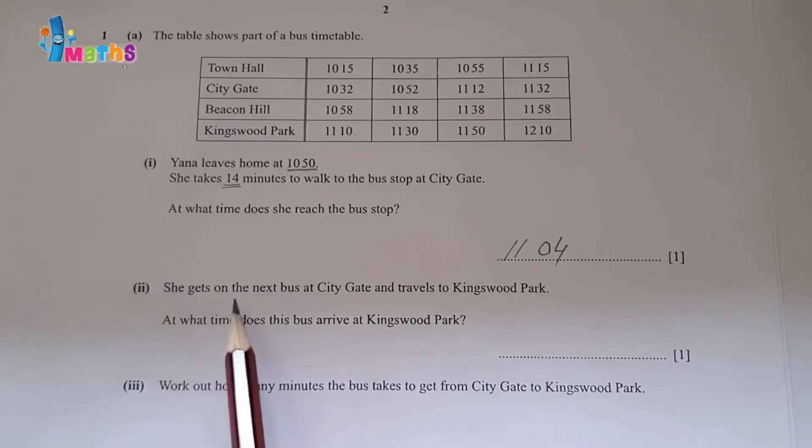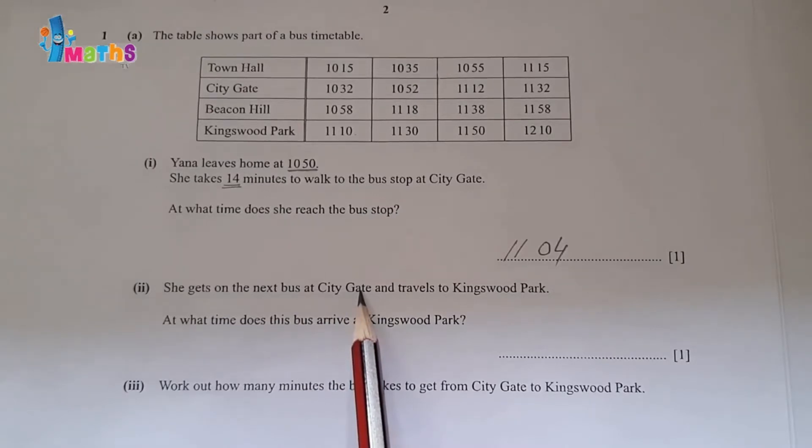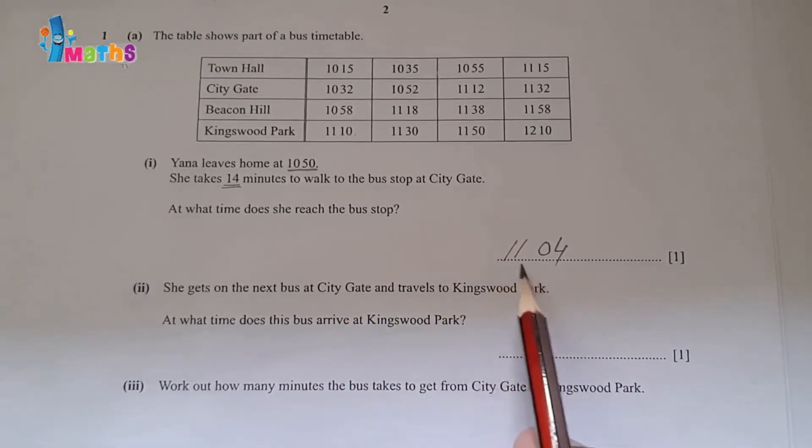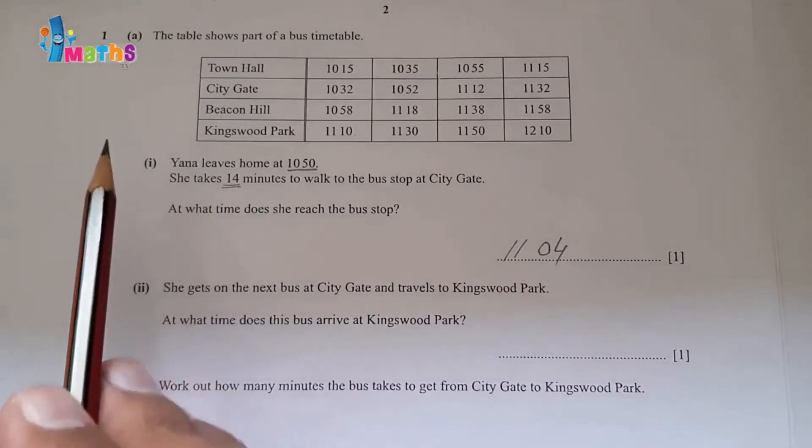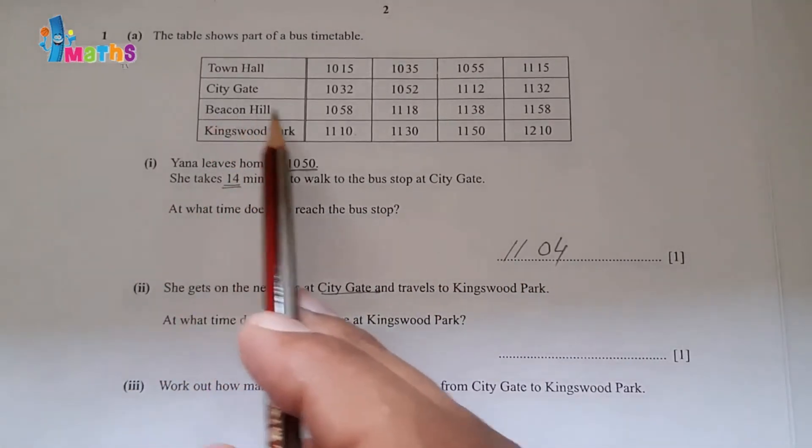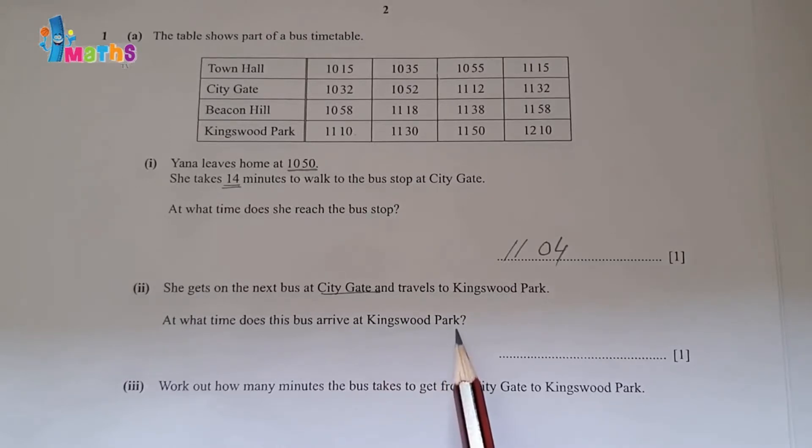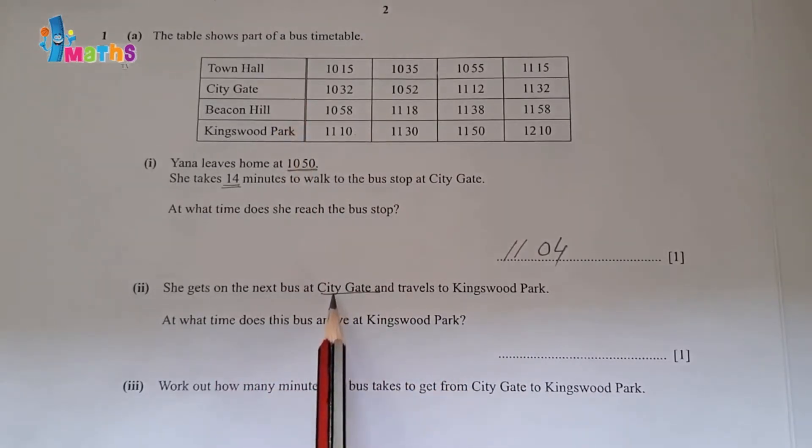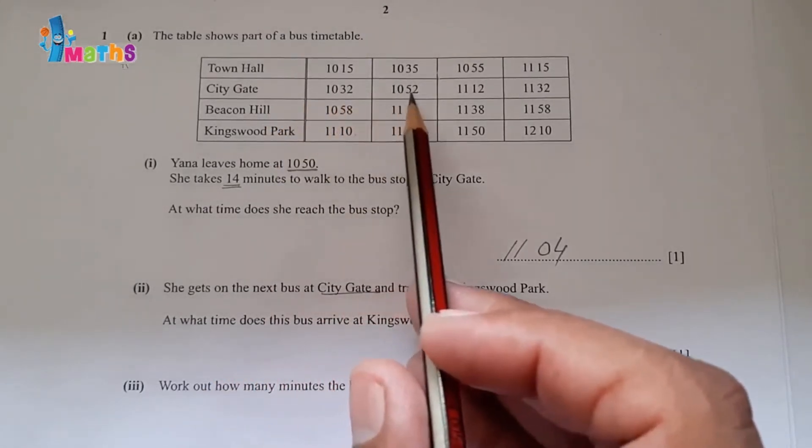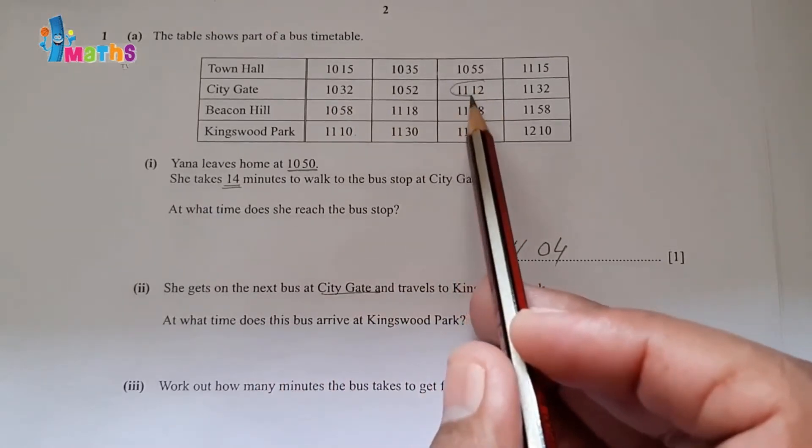Second part: She gets on the next bus at City Gate and travels to Kingswood Park. At what time does this bus arrive at Kingswood Park? So she reached at City Gate at 11:04, and she will catch this bus at 11:12.